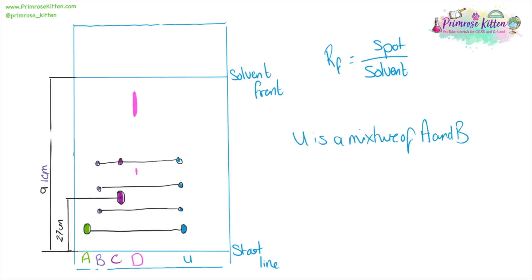So we can say the distance moved by spot is 2.7 over 9.1. That is going to give us an RF value of 0.3.